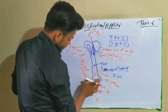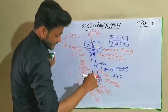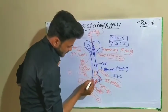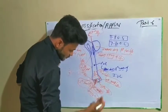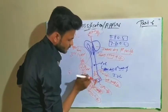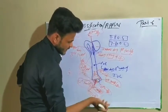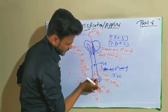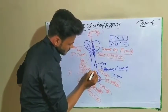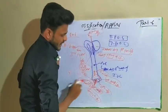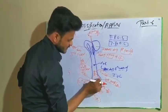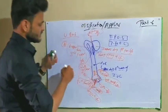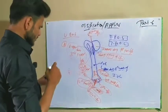So the lower end has two epiphyses. Epiphysis one is formed by the fusion of the lateral epicondyle, capitulum, and trochlea, and it fuses with the shaft at 16 years. The other epiphysis is formed by the medial epicondyle and fuses with the shaft during the 18th year of life. This is all about the ossification of the humerus.